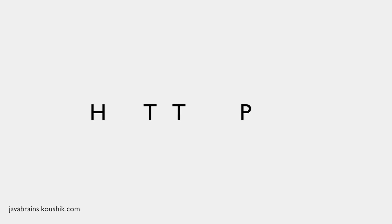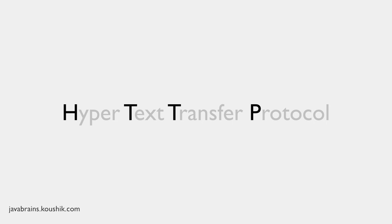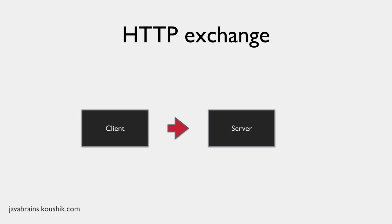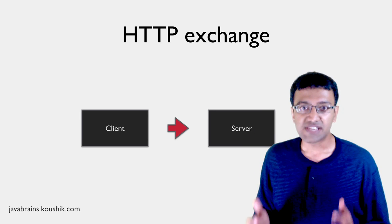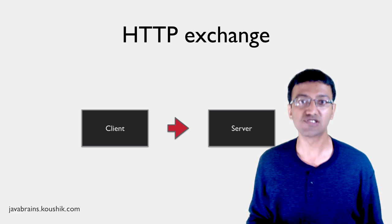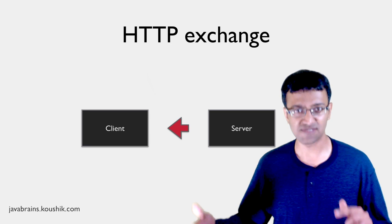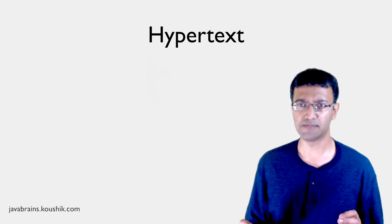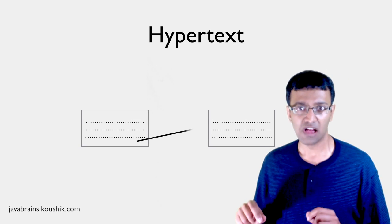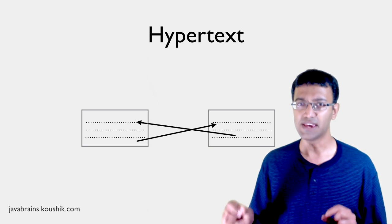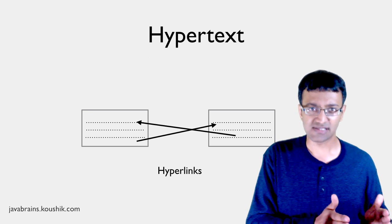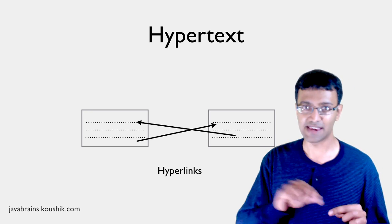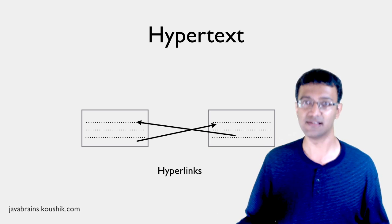HTTP stands for Hypertext Transfer Protocol. You can think of a protocol as a language or a mechanism for communication. HTTP is a way to exchange and communicate information online. The stuff that you exchange and transfer in HTTP is called Hypertext — hence the name Hypertext Transfer Protocol. Hypertext is a structured form of text that has one interesting property: it contains logical links to other text, called hyperlinks.